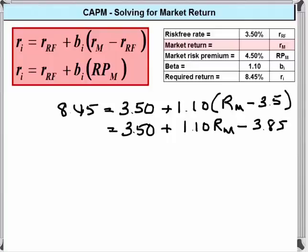Combining the percentages on the right, we're going to end up with 8.45 is equal to minus 0.35 plus 1.10 times the return on the market.